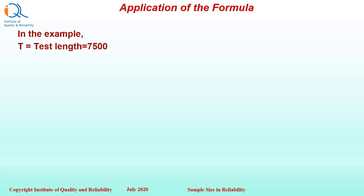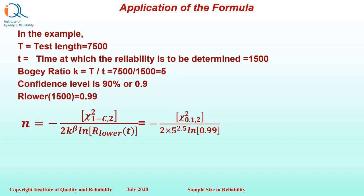In the example, test length capital T equals 7500. Time at which we want the reliability, that is small t, equals 1500. Therefore, the bogey ratio k is 5.